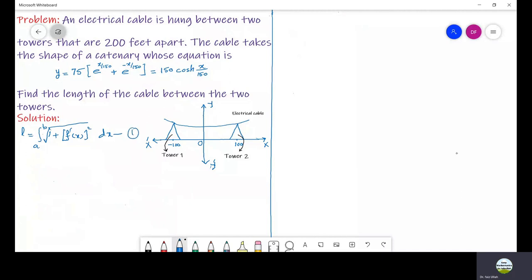Let us say this is equation 1. Now here a is minus 100 and b is 100. f of x is given by 150 cosh(x/150). Let us differentiate this.